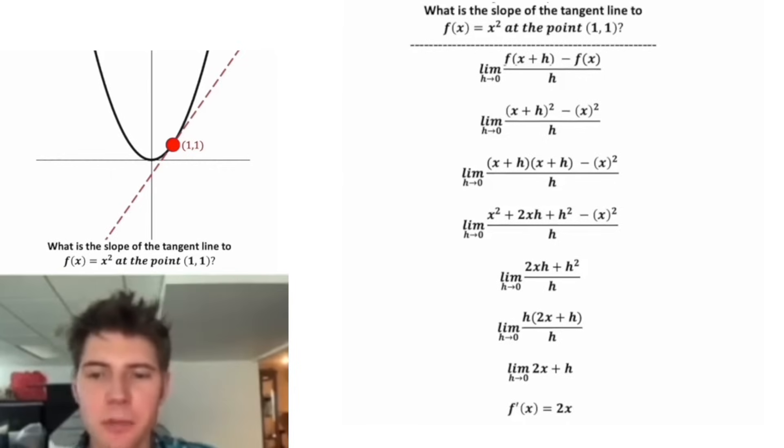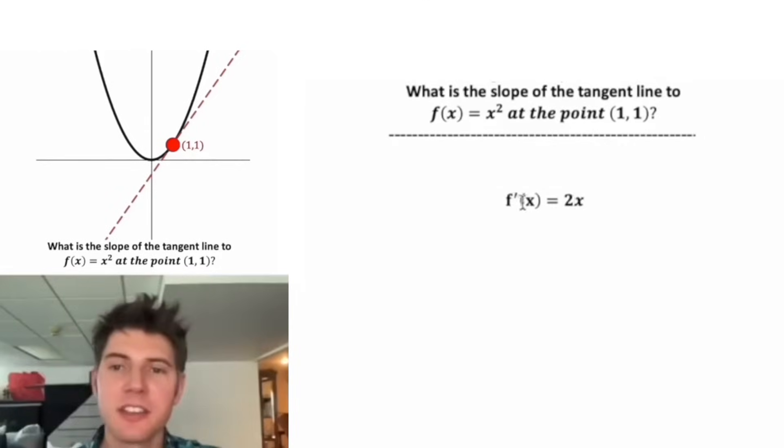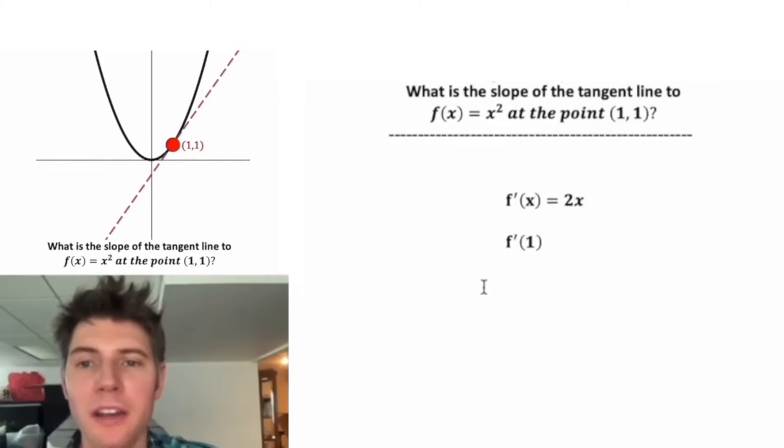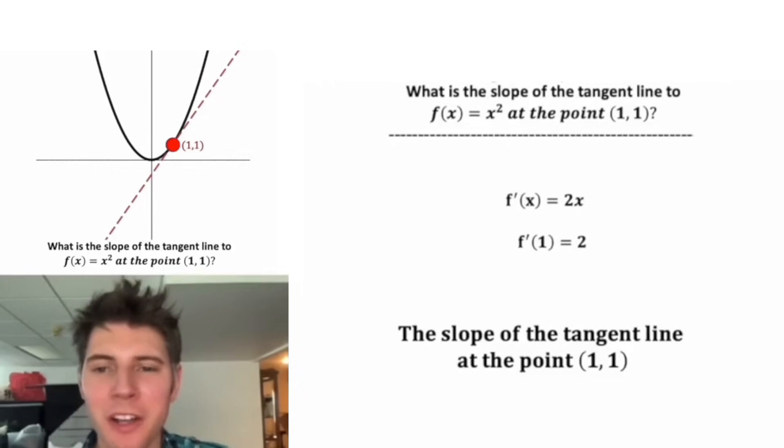And the notation we use for this, we say it's f prime of x. This means the derivative of x equals 2x. Or in other words, the slope of the tangent line is 2x. Let's get rid of all this stuff to bring this up here. This says the slope at any point x is equal to 2x. We want it specifically at the point 1. So we're going to find f prime of 1. So all we have to do is plug in 1 for the x. And 2 times 1 is 2. So the slope of the tangent line at the point 1, 1 is 2. And we just did your first calculus problem.